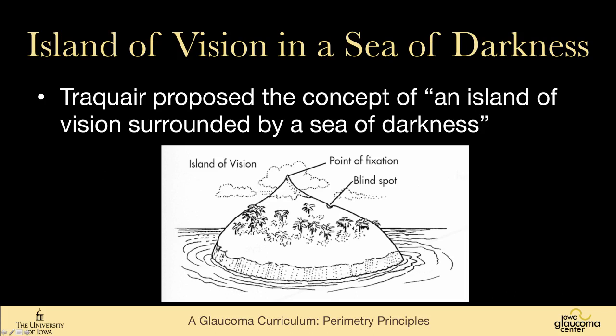The fovea is where your vision is the most sensitive, and then it drops off rather quickly until you get to the far periphery, where it disappears after you run out of retina. In here is a blind spot where the optic nerve has no overlying retina, and you could consider that like a well in the island that goes all the way through.